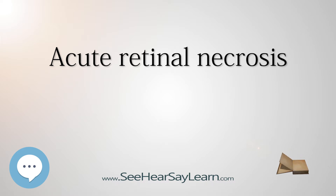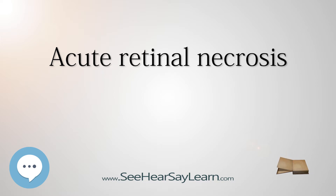Patients with ARN typically present with floaters, redness of the eye, flashes, decreased sharpness of vision, and photophobia. Though uncommon, some patients may experience pain. Most patients will only experience this in one eye (unilateral), though it is possible for the condition to be seen in both eyes (bilateral), known as BARN. If the first eye is left without treatment, some cases have shown the disease progressing to the other eye within a month. Further progressed stages can cause blindness. The inflammation of the retina may not be visualized for decades after the initial signs.